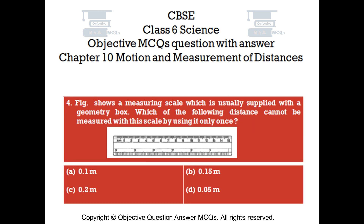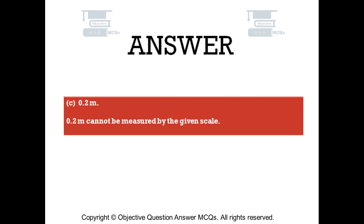Question number 4. Figure shows a measuring scale which is usually supplied with a geometry box. Which of the following distance cannot be measured with this scale by using it only once? Option A, 0.1 metre; Option B, 0.15 metre; Option C, 0.2 metre; Option D, 0.05 metre. The right answer is Option D. 0.2 metre cannot be measured by the given scale.